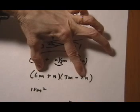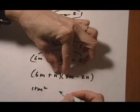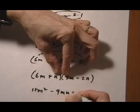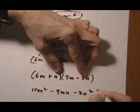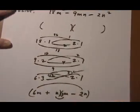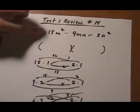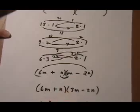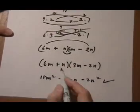Then we have minus 12mn plus 3mn which would be minus 9mn minus 2n squared. And that checks out with the original problem we had to factor which means this is the correct answer.